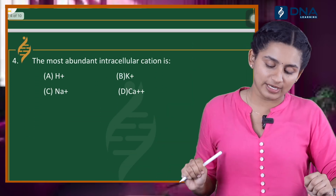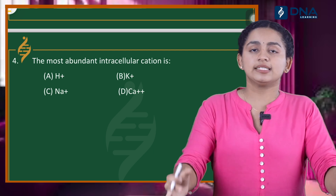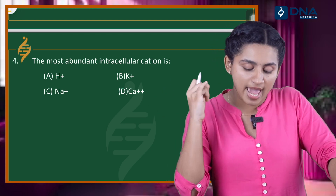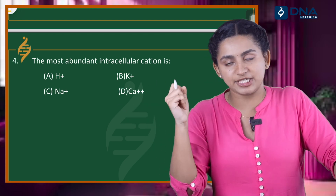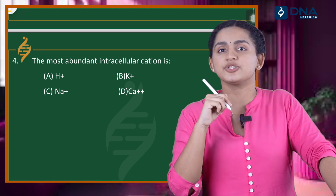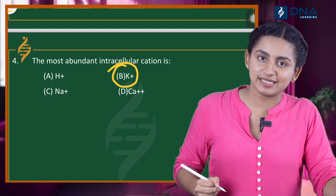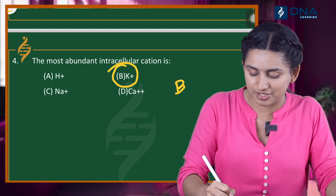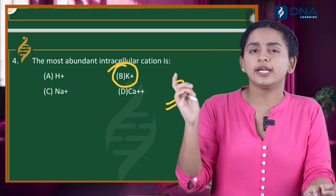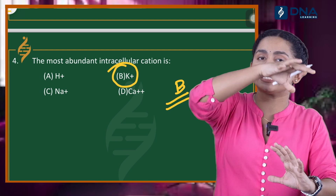Question number 4: The most abundant intracellular cation is? The options are H+, K+, Na+, and Ca2+. The correct answer is K+, that is Option B. Na+ is the extracellular cation — it is found in extracellular fluid — while K+ is the intracellular cation.